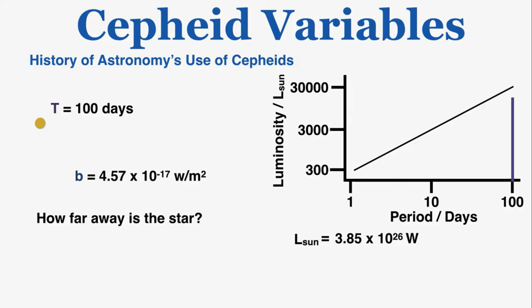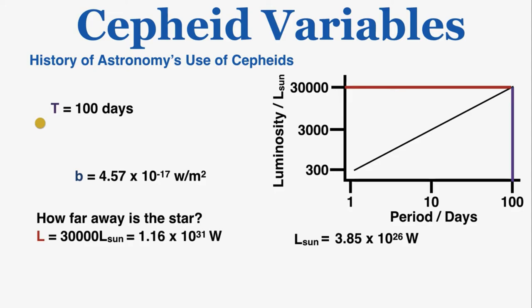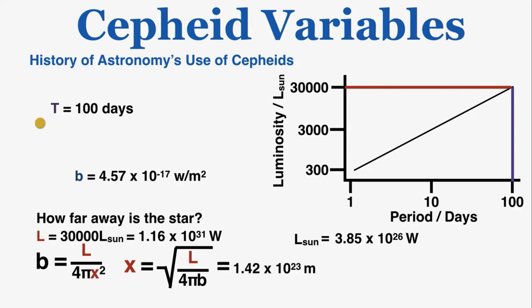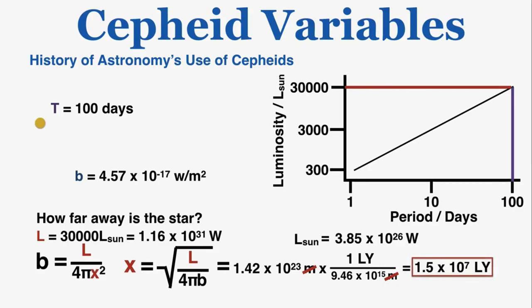If the period is 100 days, the luminosity is 30,000 times the luminosity of the Sun, equal to 1.16 × 10³¹ watts. Using the brightness equation with brightness and luminosity, we can rearrange to find the distance. Plugging in the numbers gives a distance of 1.42 × 10²³ meters, which converts to 1.5 × 10⁷ light-years, or 15 million light-years — measured using only the star's period and its brightness observed on Earth, plus Leavitt's period-luminosity pattern.